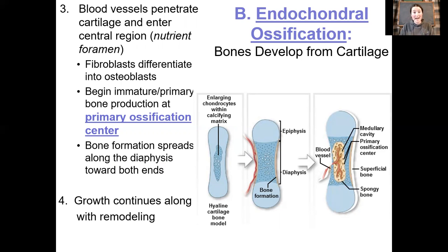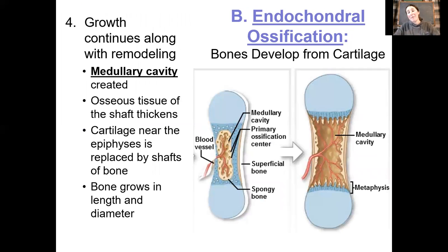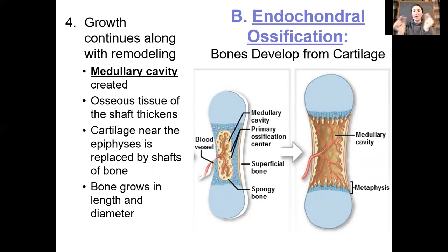Baby bones are still very flexible because they have a greater than 35% organic matrix compared to adult bone. As soon as this bone is laid down, osteoclasts are going to come back and break it down, and osteoblasts will build it up in a nice lamellar structure. This remodeling process continues; overall, the activities of the osteoclasts and osteoblasts are ultimately going to open up the medullary cavity. Stronger, more organized bone thickens the bony collar and the shell around the diaphysis, becoming much stronger.